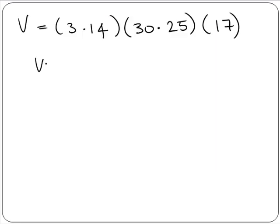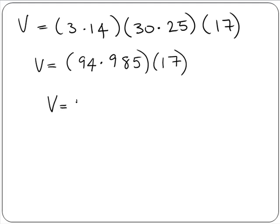So now we will multiply the 3.14 by the 30.25 and we get 94.985. This has to be multiplied by 17. When we multiply this out we get 1614.745.